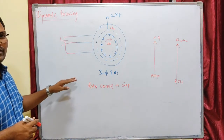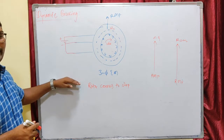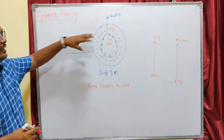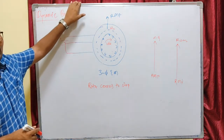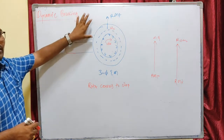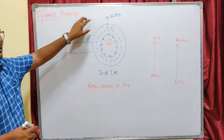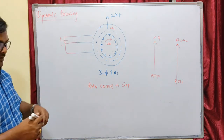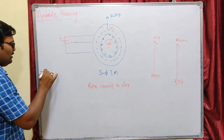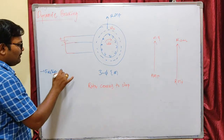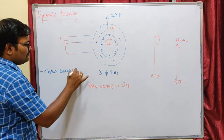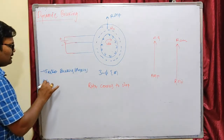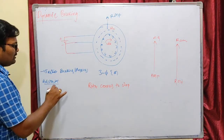In regenerative braking, we decrease the supply frequency so that the synchronous speed reduces and the machine operates as a generator, supplying power to the grid. In plugging, we interchange the two phases of the stator's supply, which causes a faster speed reversal. The fastest braking method is plugging, and its advantage is fastest braking.